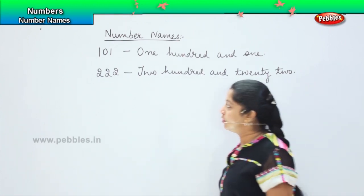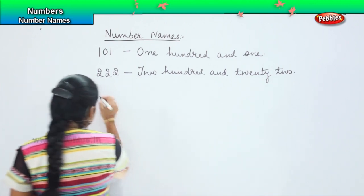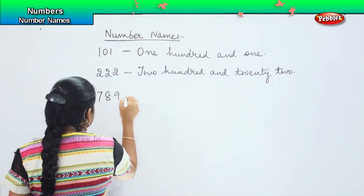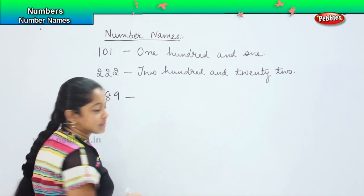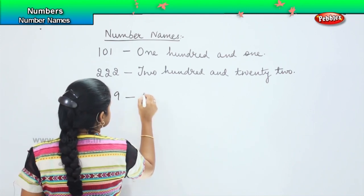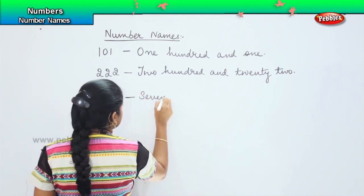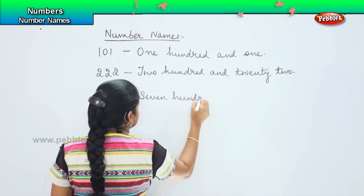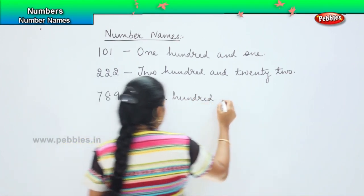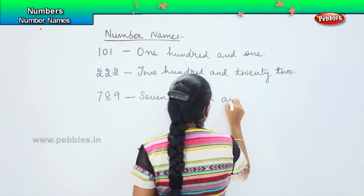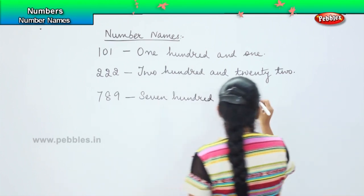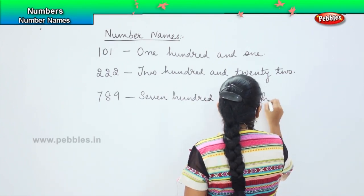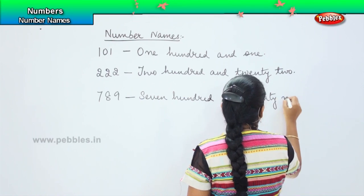Shall we do one more? The next one is seven, eight, nine. So how will you write it? Seven hundred and eighty nine.